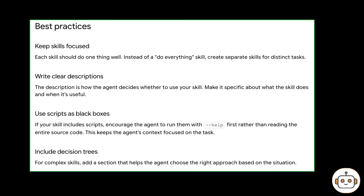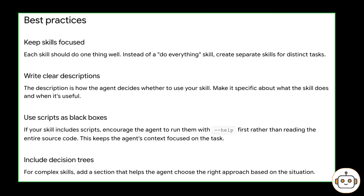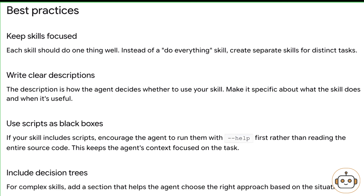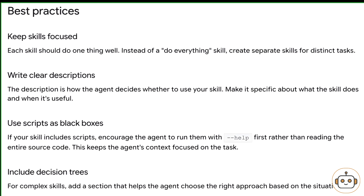Using the best practices is what actually boosts your productivity. First, keep skills focused — each skill should do one thing well. Instead of a single do-everything skill, create separate skills for distinct tasks. Second, include decision trees. For more complex skills, add a section that helps the agent choose the right approach based on the situation.